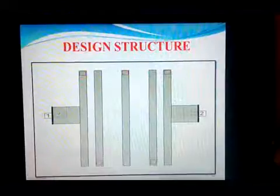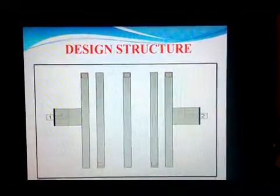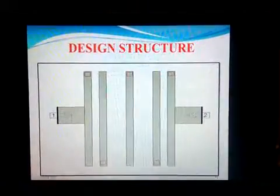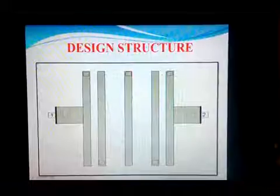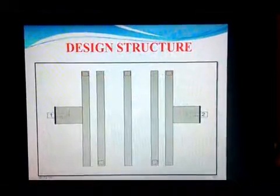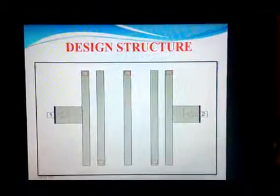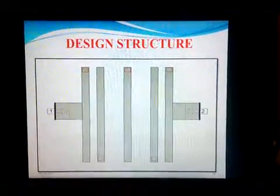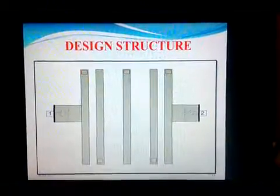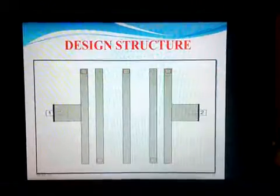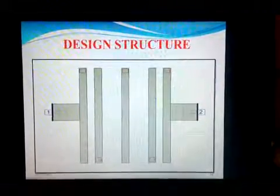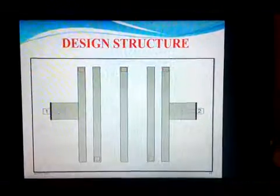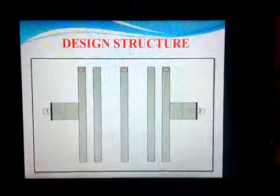This is the exact structure of the microstrip inter-digital bandpass filter. It consists of 5 resonators made of copper conductor, and the outer layer — the substrate — is alumina, which has a dielectric constant of 9.8. Two ports are provided: port 1 and port 2. SMA connectors are used, and the feeding method is coaxial feeding.